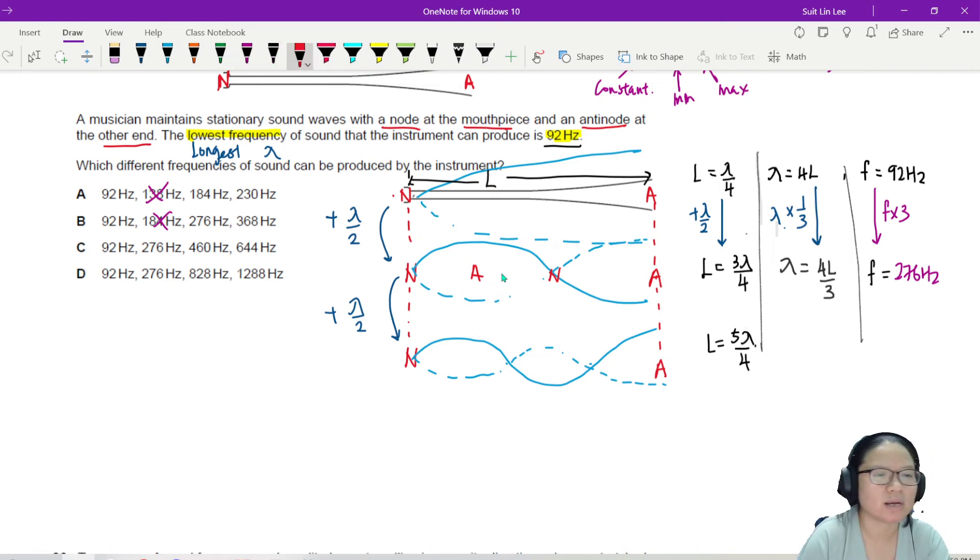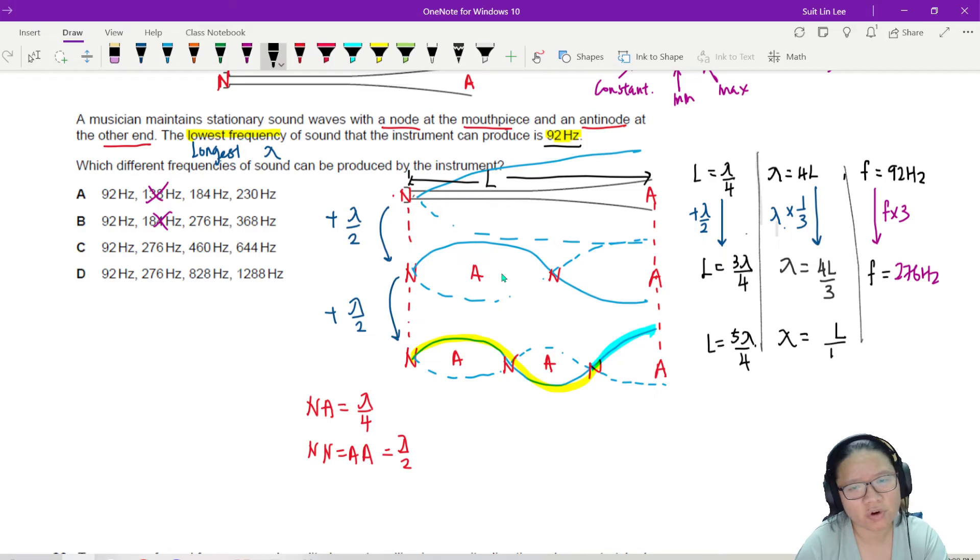So right now, the length can fit 5 quarter wavelength. What I like to do is, I just count the number of NAs. Because 1N to A is lambda over 4. N to N is equal to antinode to antinode, which is lambda over 2. This is a nice way to count. Or you literally draw the wave. This is 4 over 4 lambda. Then we plus another quarter. However works. Visual person also can. Just count the NA NA also can. So from here, you will realize that your lambda is actually 5L over 4. Wait. Sorry. 4L over 5.